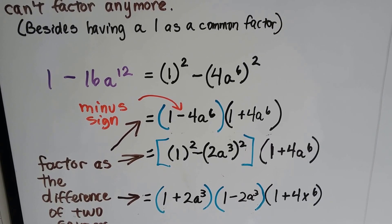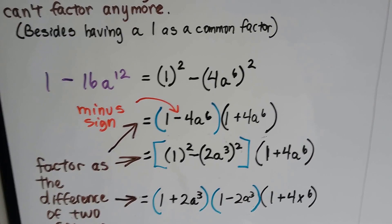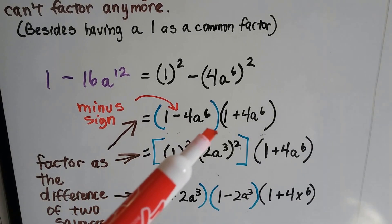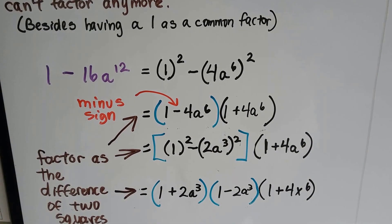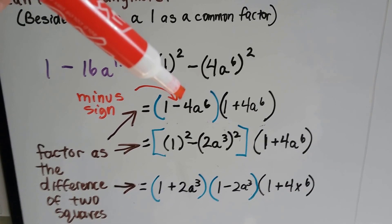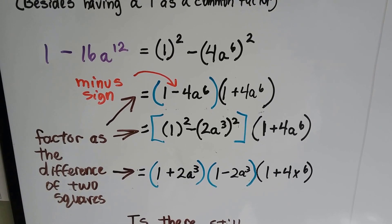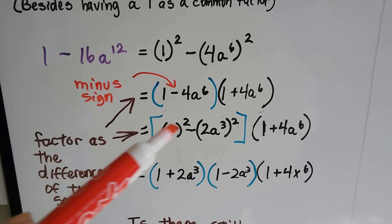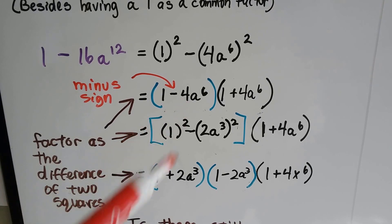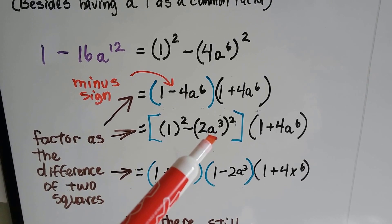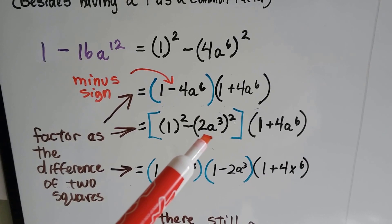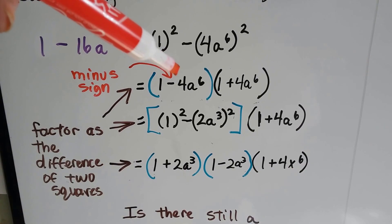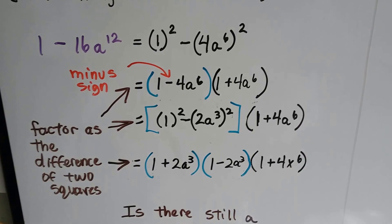When we factor it as the difference of two squares, we end up with 1 minus 4a to the 6, and 1 plus 4a to the 6. And because this has a minus sign, we can factor it as the difference of two squares again. This would be 1 squared, and 2a to the 3rd times 2a to the 3rd would give us 4a to the 6. So we can do it again with this one, because there's a minus sign here.